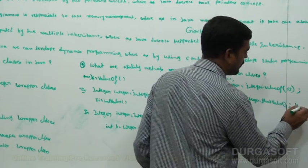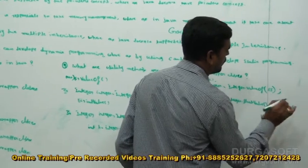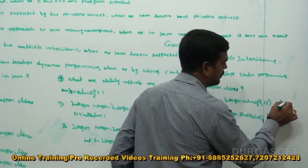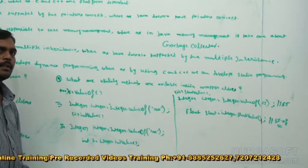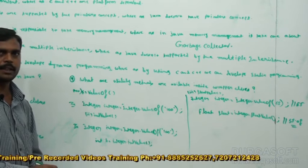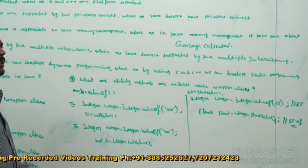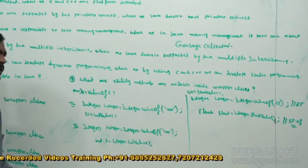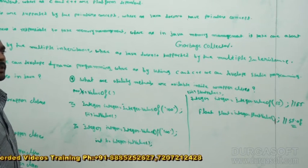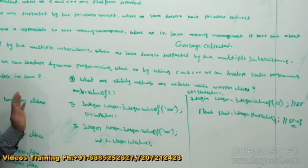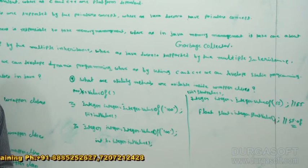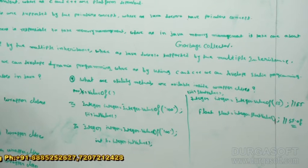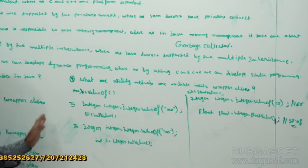What is the output here? We are going to get the output as 55.0 — that is integer 55 only. Like this, by using these utility methods according to our requirement, we can convert wrapper classes into primitives and primitives into wrapper classes. That is the usage of these utility methods. So many methods are there — `toString`, `floatValue`, `doubleValue` — different utility methods are available in wrapper classes, and we can use them depending on our requirement. The main intention of these utility methods is to convert primitives into wrapper type and wrapper type into primitives.